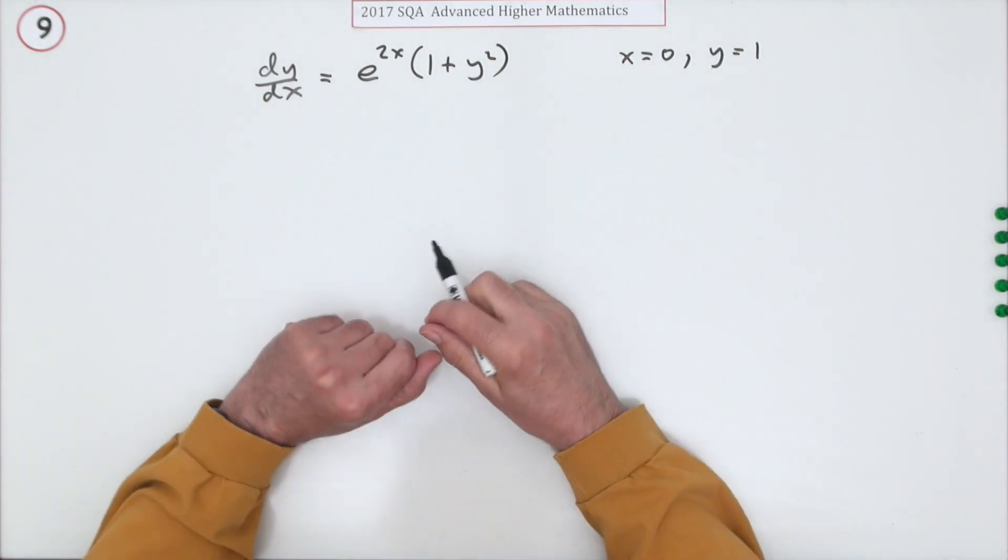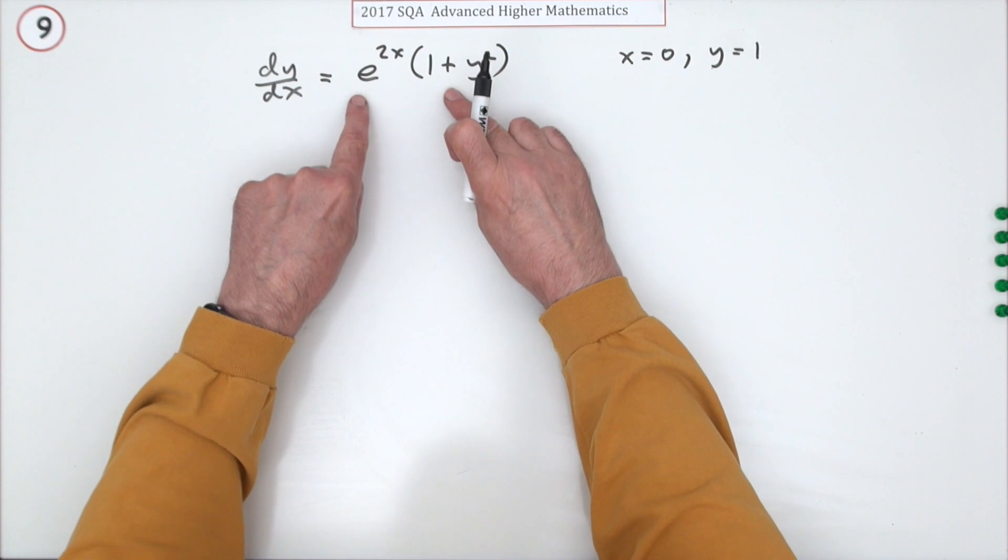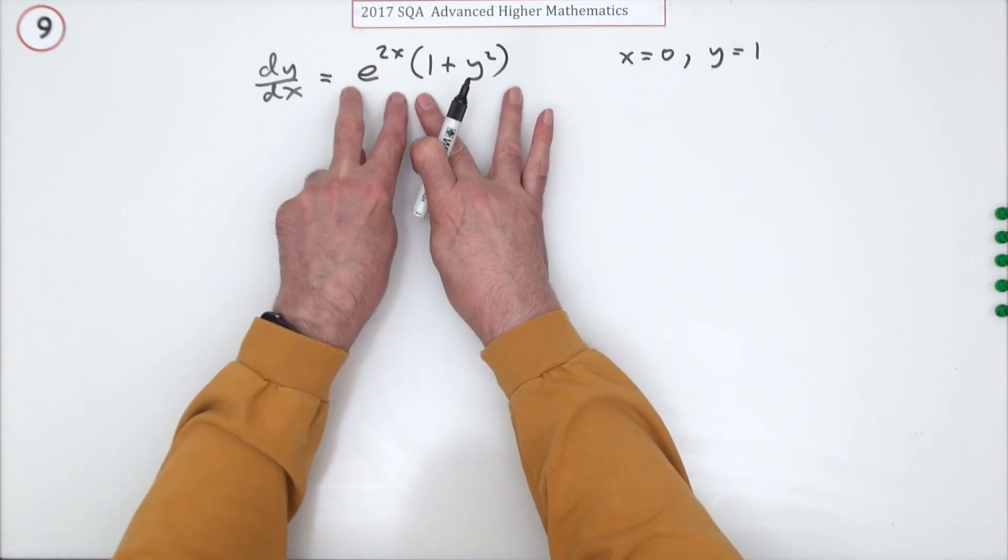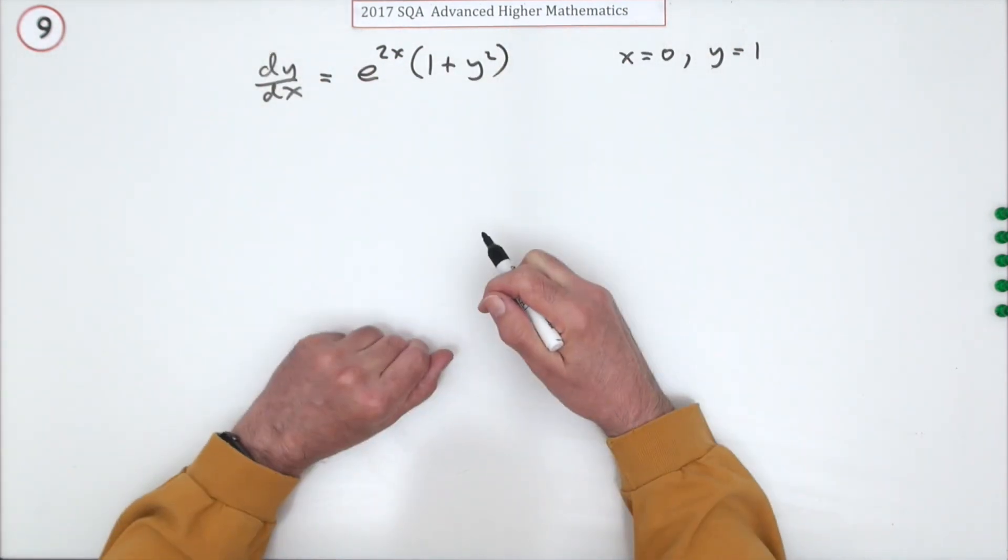Well, it's just a little first order differential equation. You've only got the first derivative there. And quite conveniently here, look, you've got two separate factors. One involving only x, one involving only y. That means you can separate them quite easily.